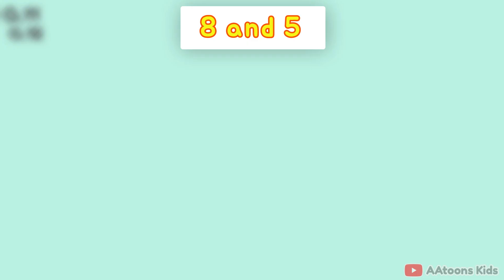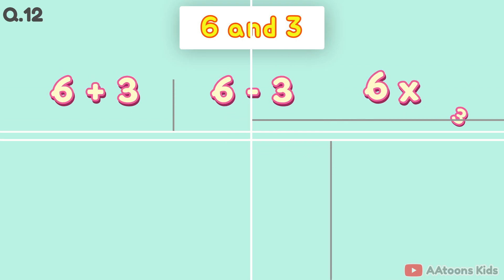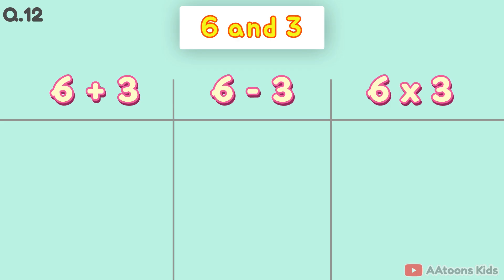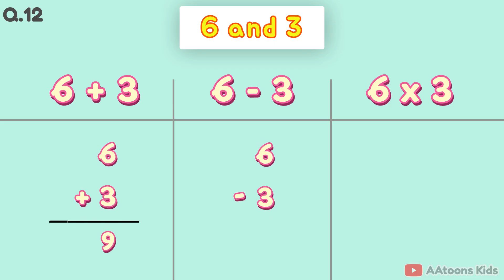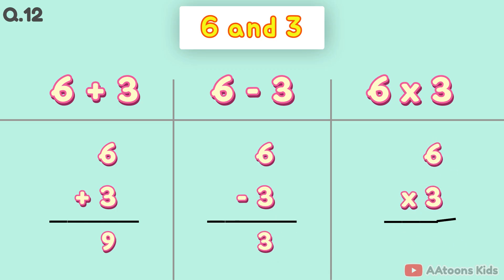The two numbers are 6 and 3. 6 plus 3 is 9. 6 minus 3 is 3. 6 times 3 is 18.